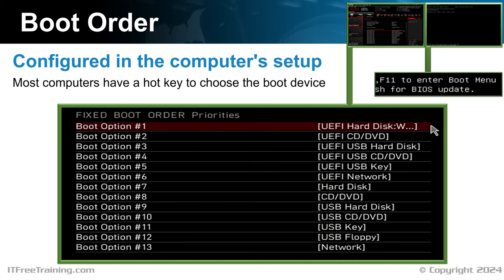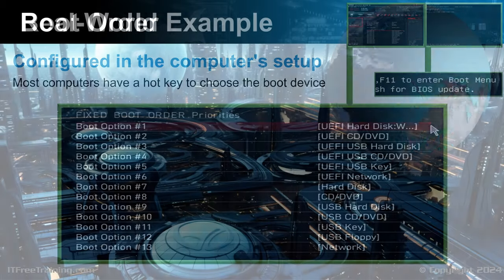When a computer bypasses its normal boot device and starts booting from an alternative source lower in the boot order, it often indicates an issue with the primary boot device. Thus, when you see this problem, it is best to start troubleshooting from the storage device the computer is supposed to boot from.